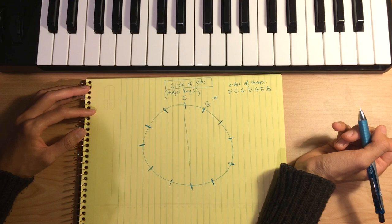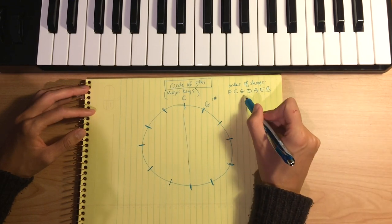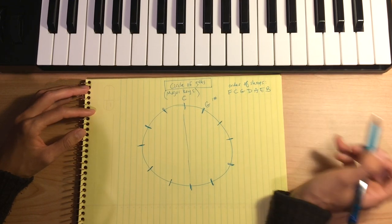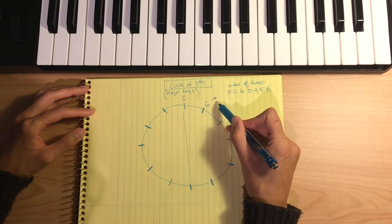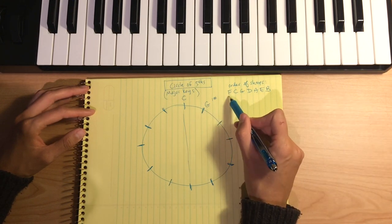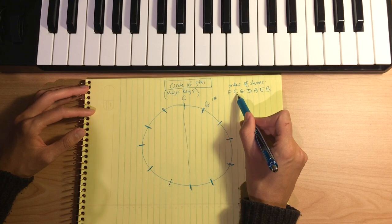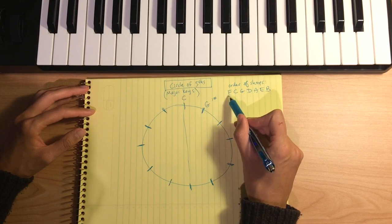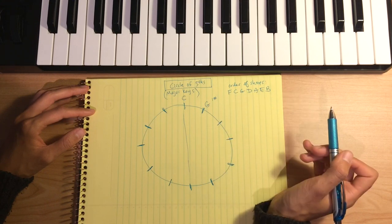How are you supposed to remember that? Fat cats go down alleys eating bacon. The key of G major has one sharp; we go in order so the first sharp will be F sharp. In the next key it will be F sharp and C sharp. In the next scale with three sharps it will be F sharp, C sharp, and G sharp — it just keeps adding an extra sharp each time.